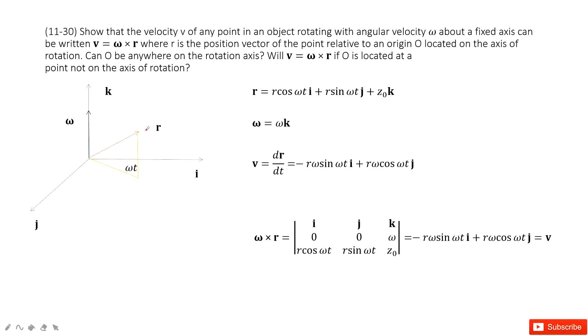First, we consider a point rotating with angular velocity ω about a fixed axis. So ω is in the k component. We write ω as ω k. And then, because it is rotating around the k axis, the position we consider is there.